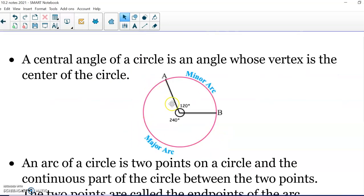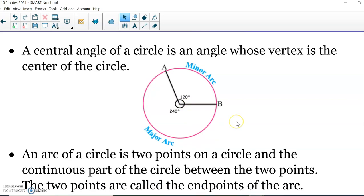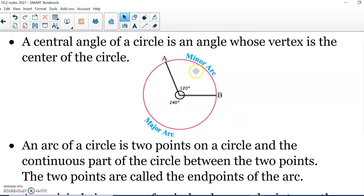First thing we're going to talk about is called a central angle. A central angle is formed by two radii, where the vertex of the angle is the center of the circle. That central angle forms what we call an arc. An arc is a continuous part of the circle, and it starts at A and ends at B. We call those two points the endpoints of the arc.